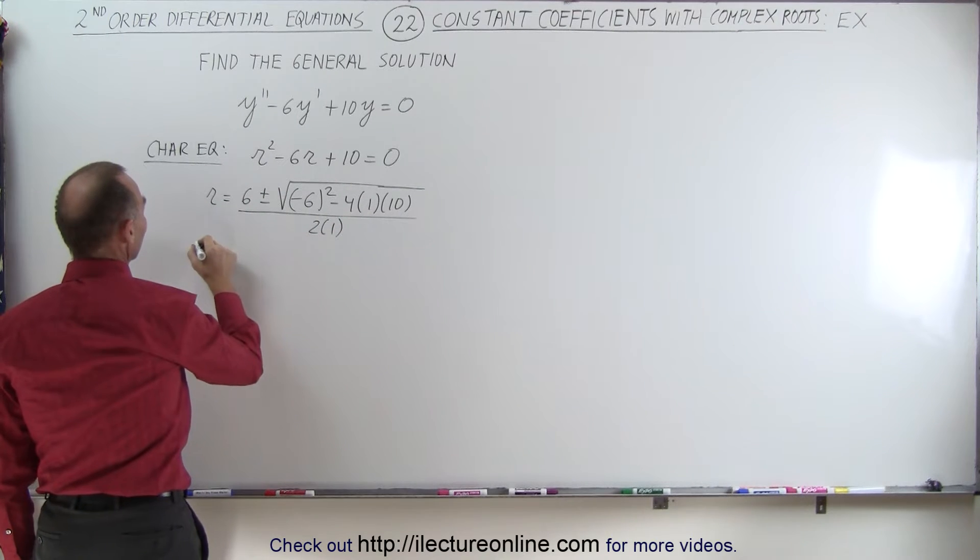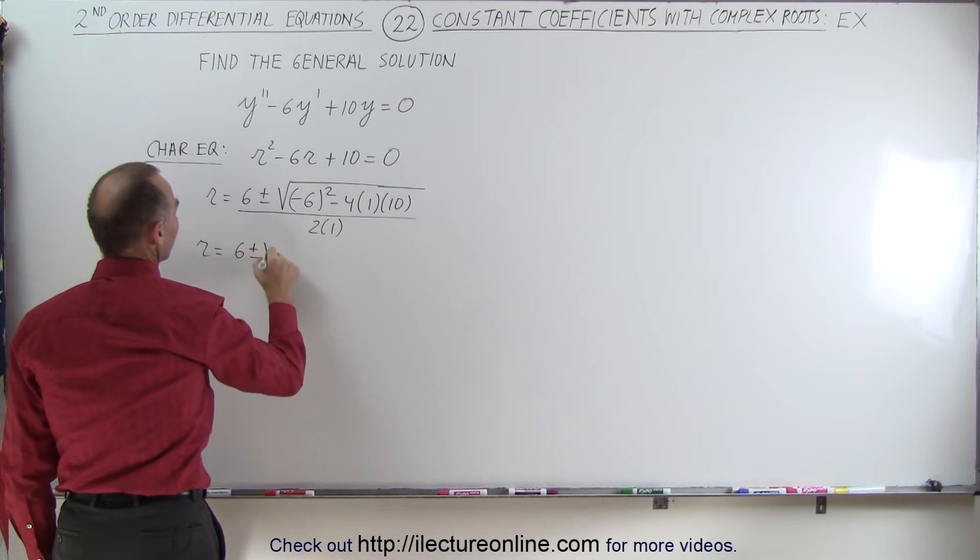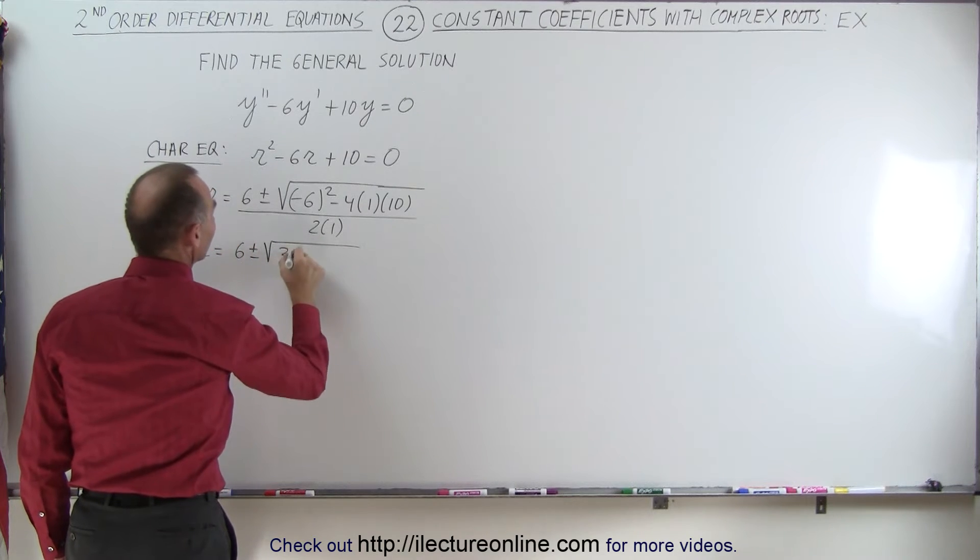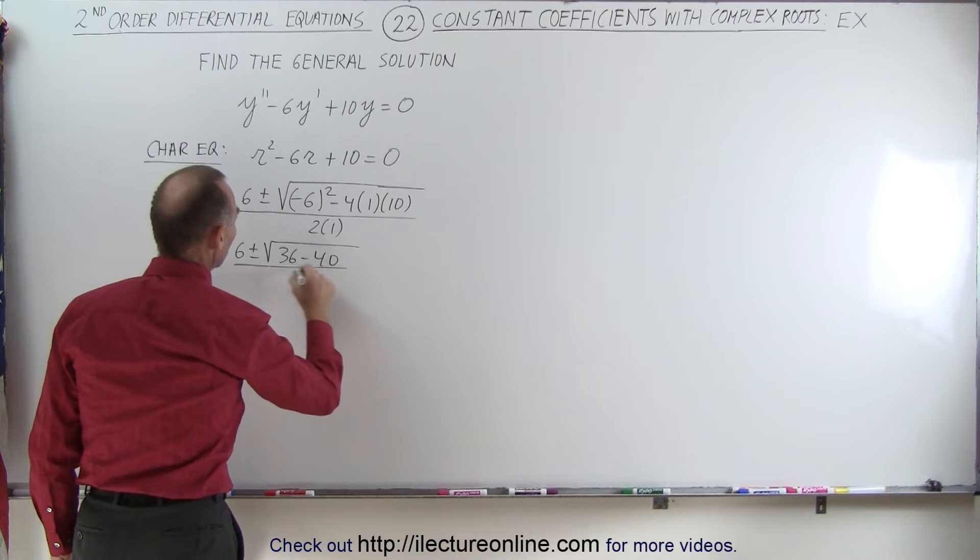And simplifying that, we get the roots to be equal to 6 plus and minus the square root of 36 minus 40 over 2.